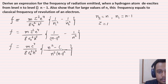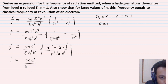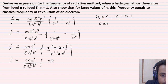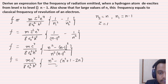The numerator becomes N² − (N-1)². Expanding using (a² − b²) = a² + b² − 2ab, the numerator is N² − (N-1)² and the denominator is N² × (N-1)².